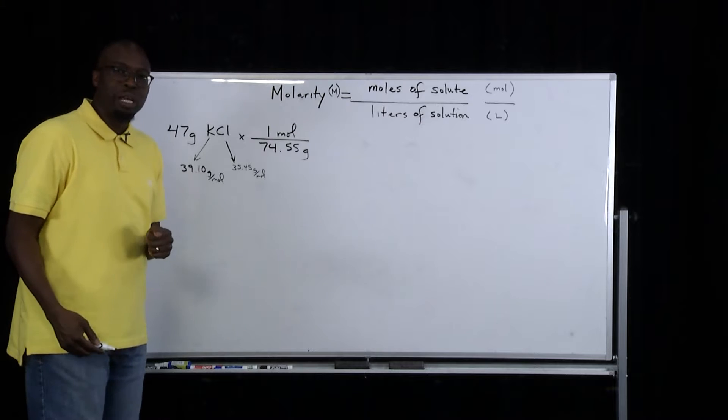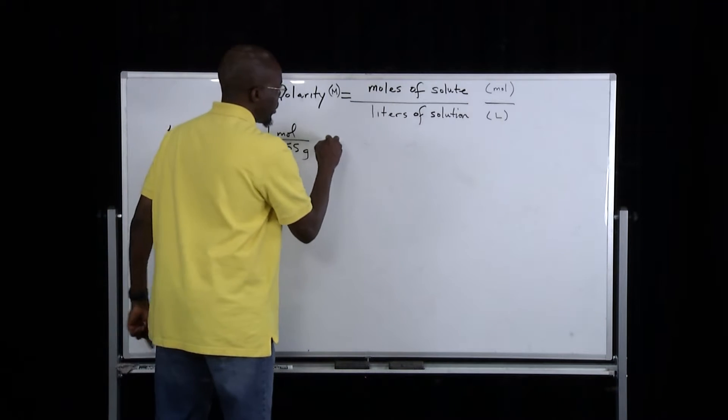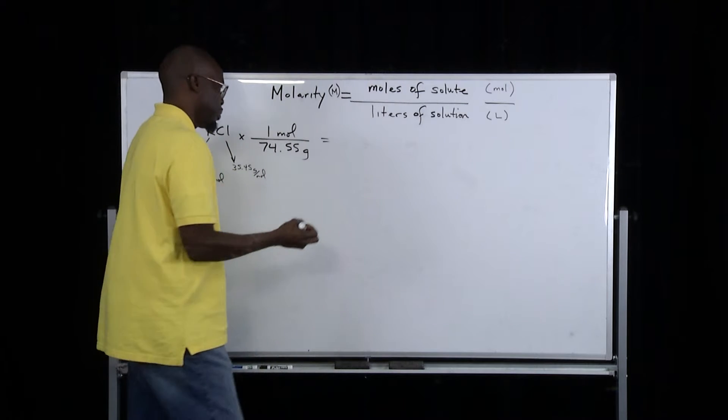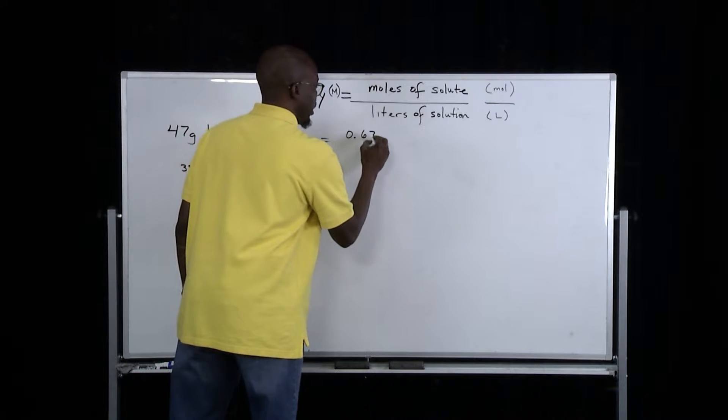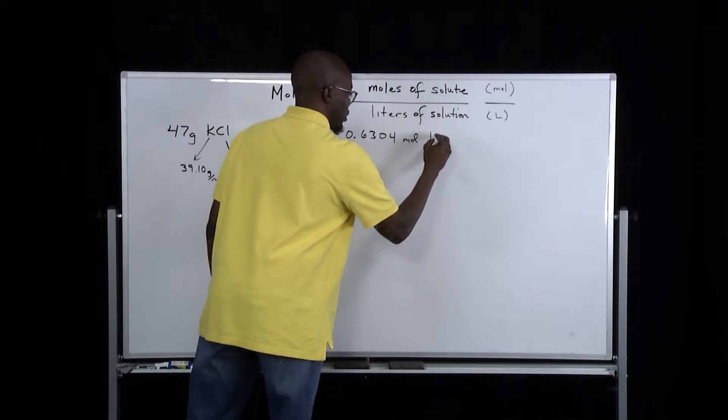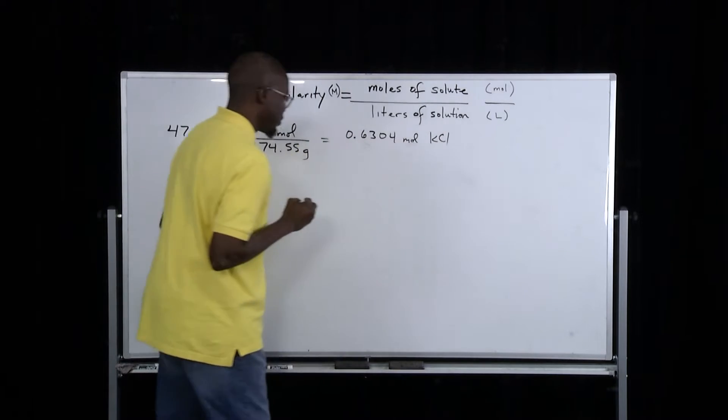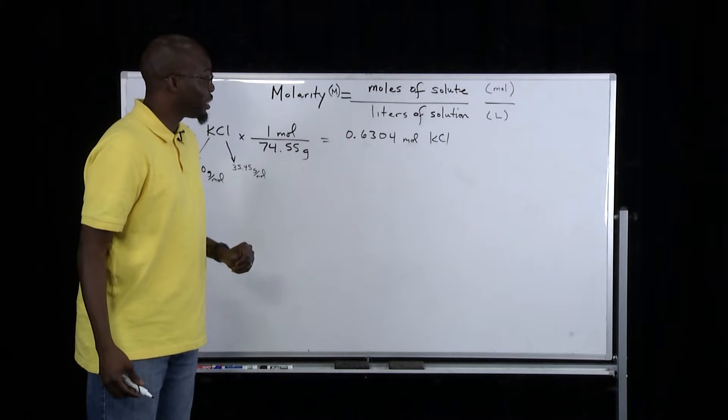If we divide 47 grams by the molar mass, which is 74.55, then we get a value for the number of moles of 0.6304 moles. That satisfies at least the first part of this molarity equation.